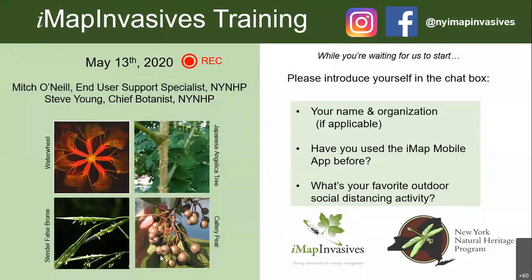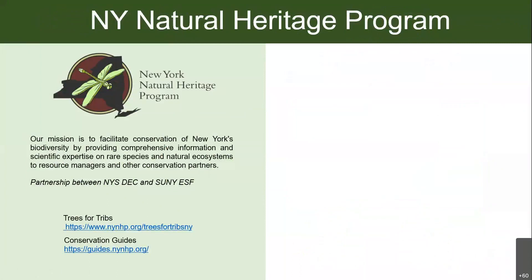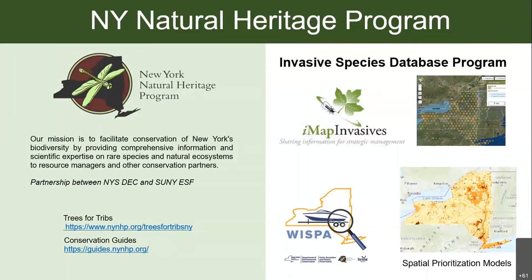We are part of the New York Natural Heritage Program — NYNHP for short — and we work to facilitate conservation of New York's biodiversity. We do a lot of work with rare native species, but since invasive species pose such a threat to biodiversity, NYNHP has also developed the invasive species database program. We're most well known for running IMAP Invasives in New York, but we are also involved in a number of other projects.